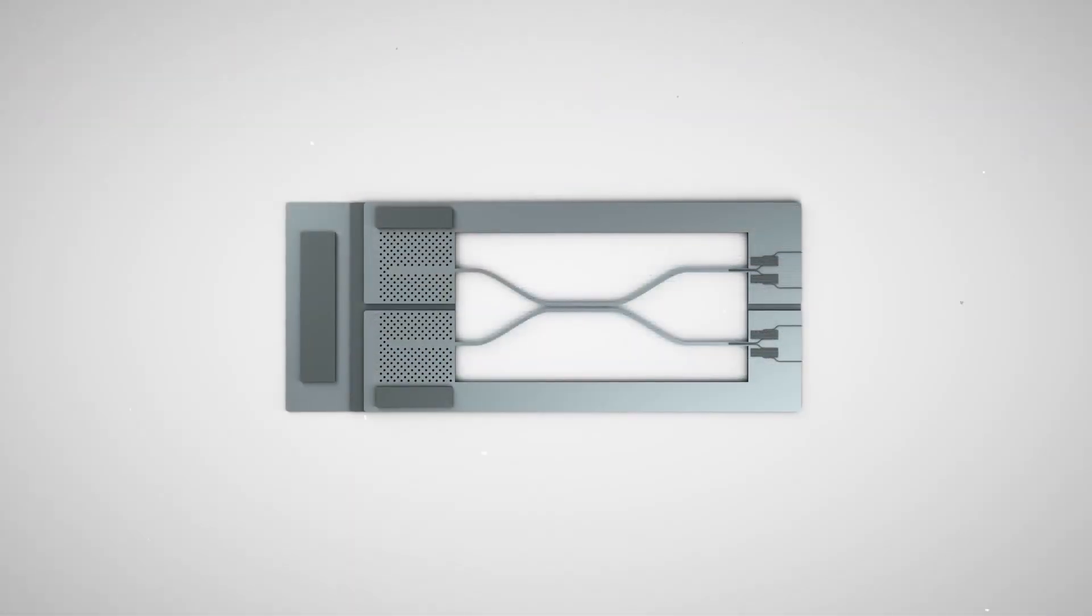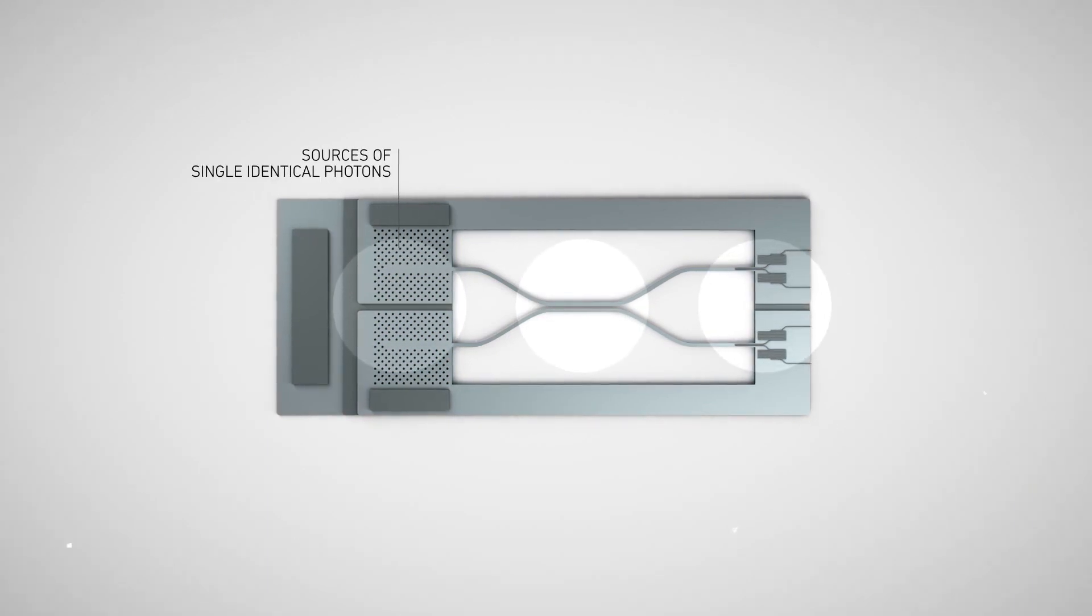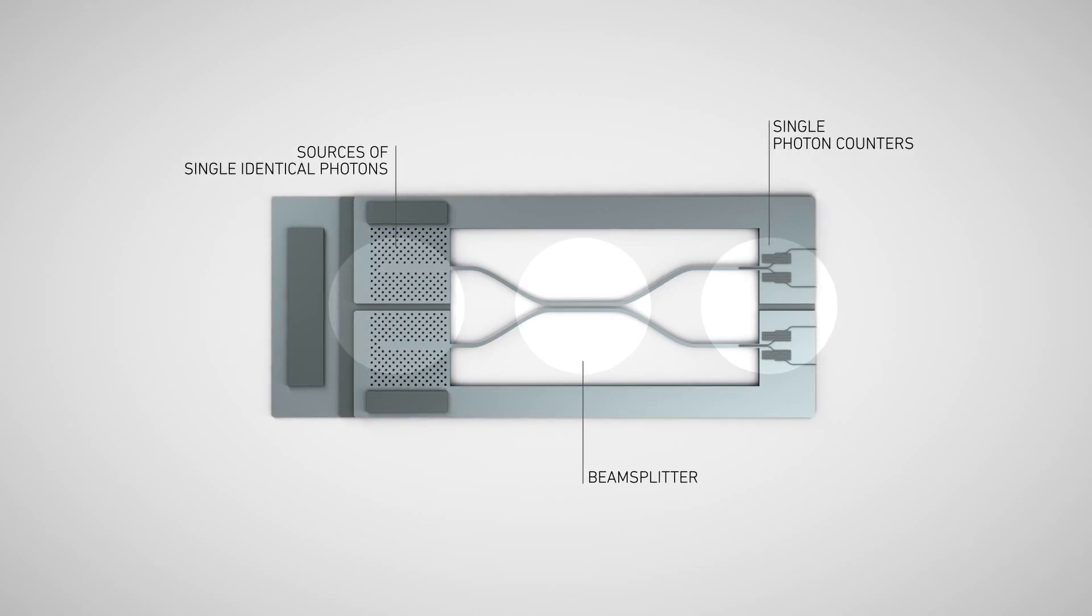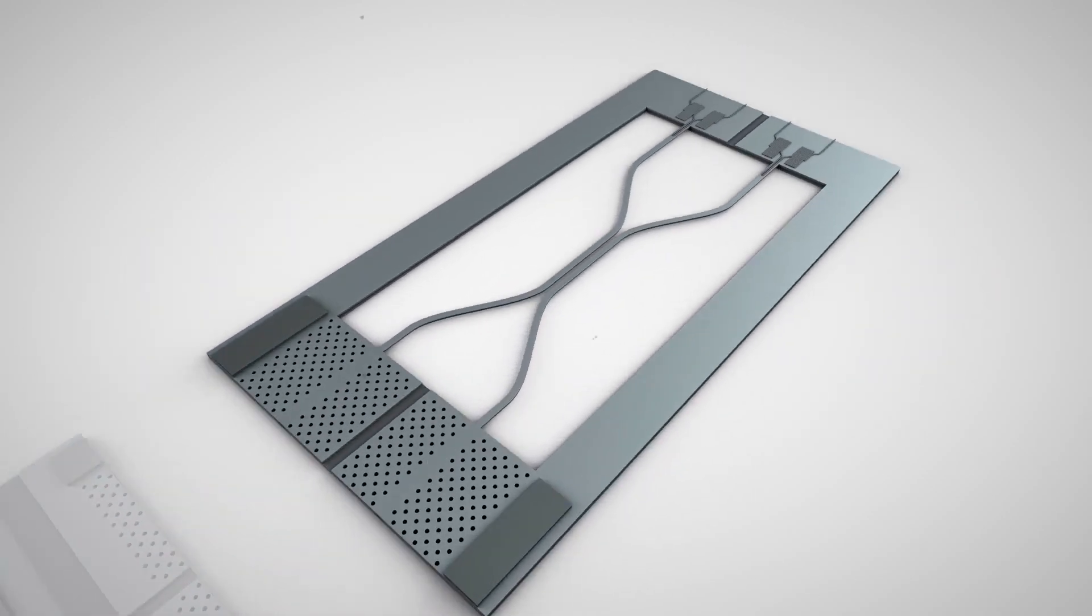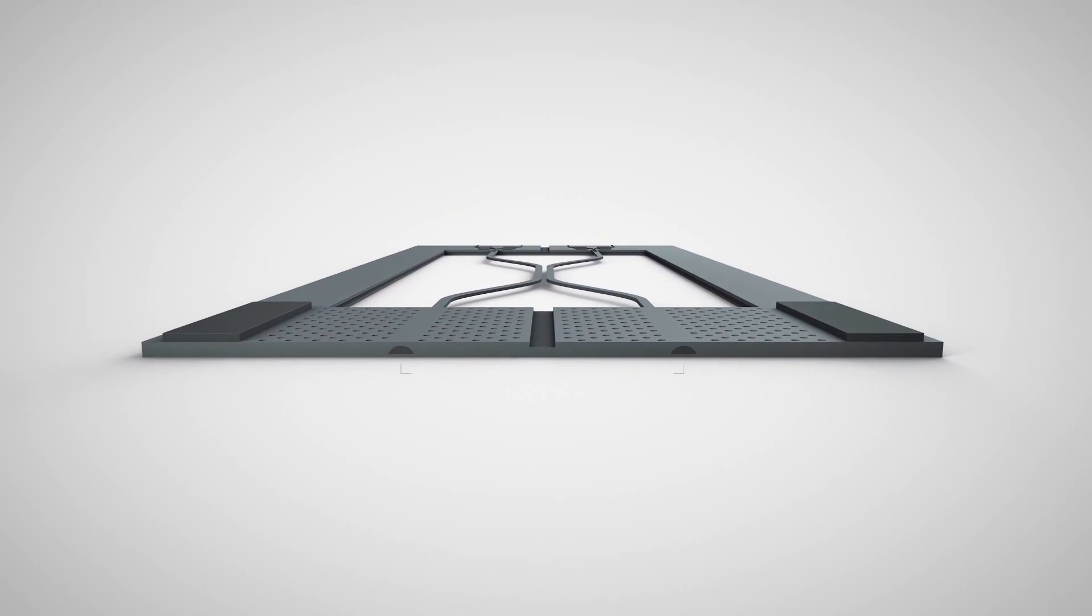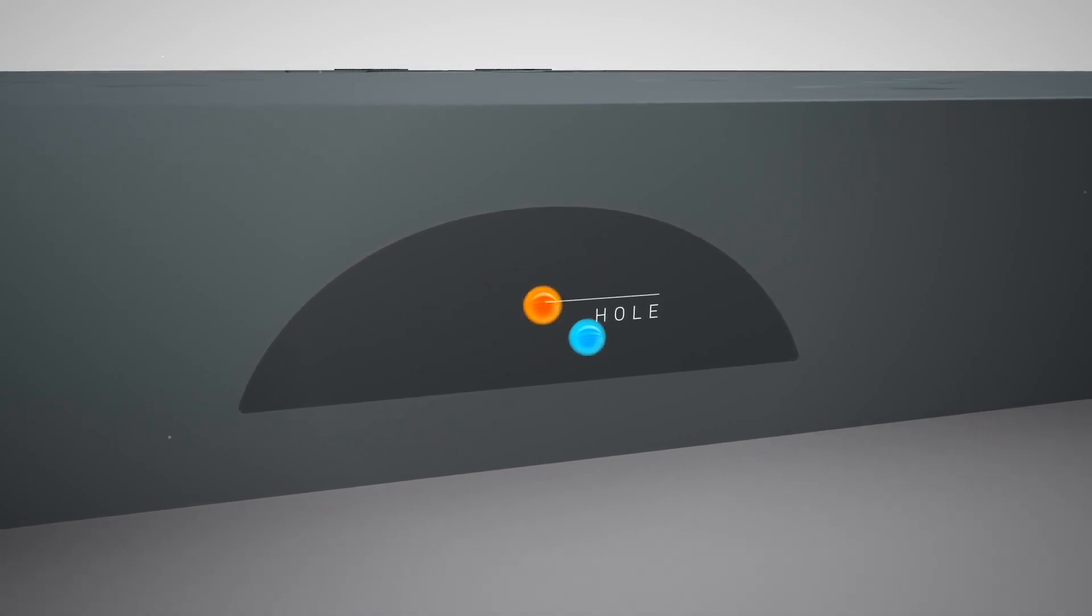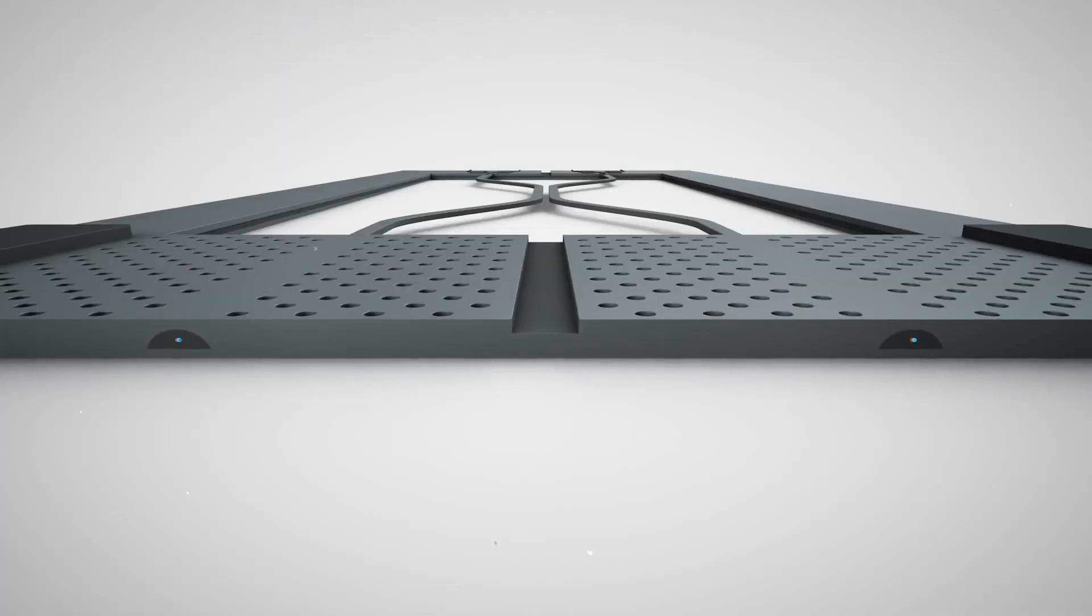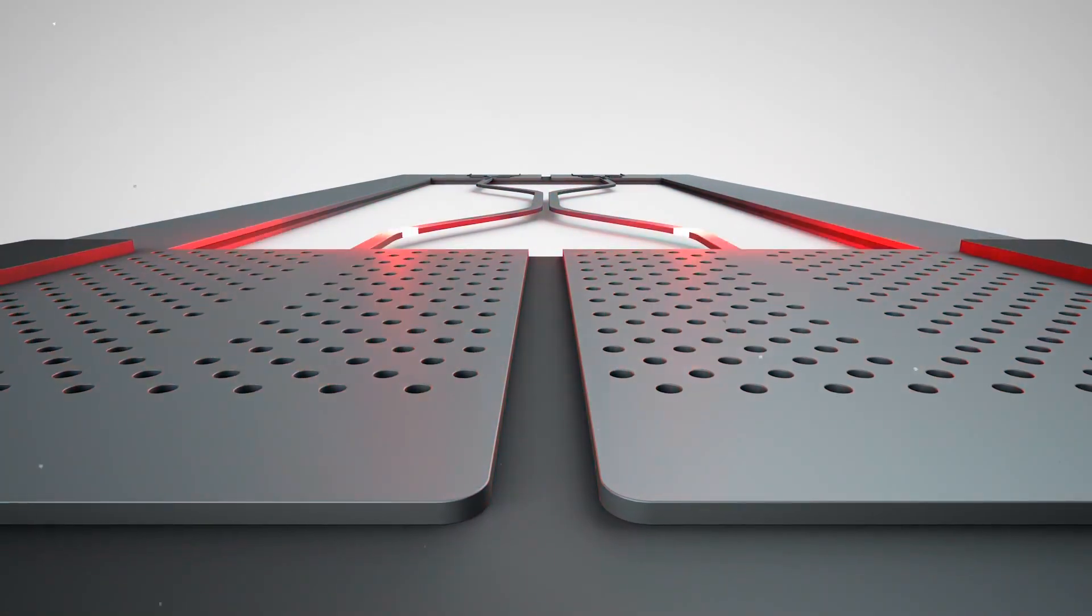The simplest possible quantum circuit with photons requires three key components: sources of single identical photons, a beam splitter and single photon counters. Single photon sources are implemented using quantum dots, nanostructures able to trap one electron and one hole. When the electron falls into the hole, a photon is emitted. Trains of identical photons can be obtained by repeating this recombination process in a controllable way.